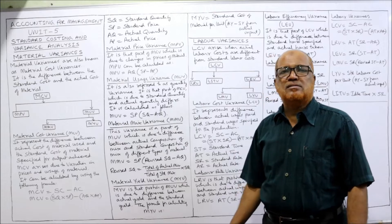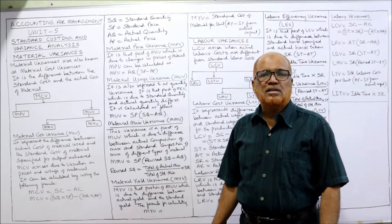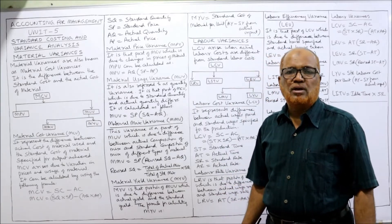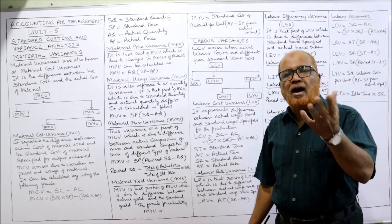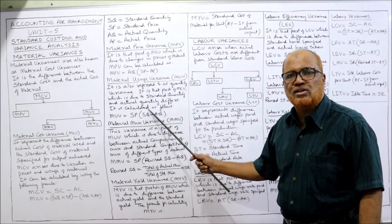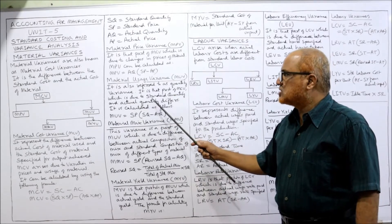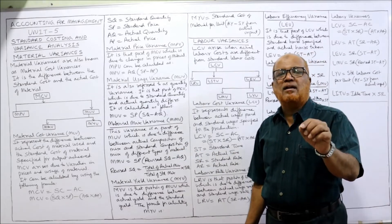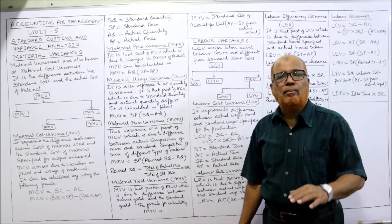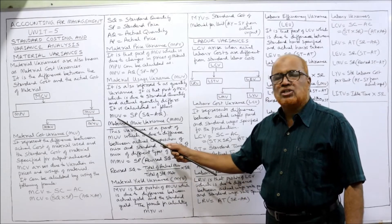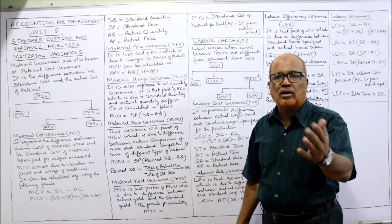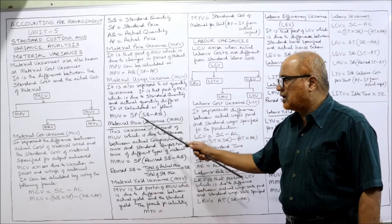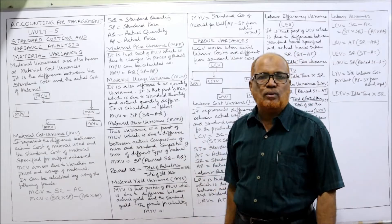The next is material usage variance, MUV, also called material quantity variance or consumption variance. It refers to how much quantity we estimated versus how much we actually used — for example, how many kilograms estimated versus actually used. It is that part of MCV due to the difference between standard quantity and actual quantity. Formula: MUV = SP × (SQ − AQ). Standard price multiplied by the difference of standard quantity minus actual quantity.